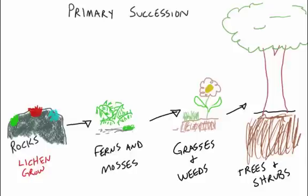Here's an example of primary succession. It starts with some bare rocks, and organisms called lichen grow on the rocks. The lichen absorb moisture, trapping it from the air. Lichen is actually a symbiotic relationship between two species — fungus and algae. They both benefit from the relationship. The lichen grow, they die, they start to dissolve the rock and create acids.